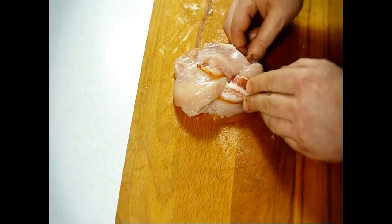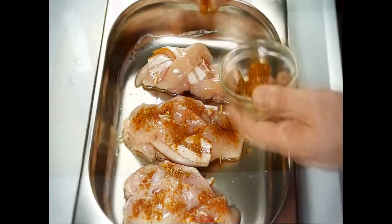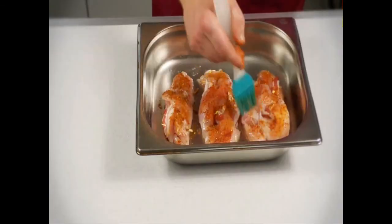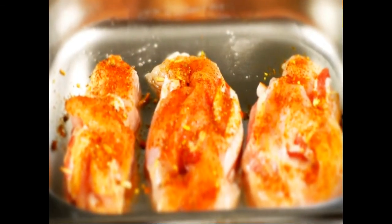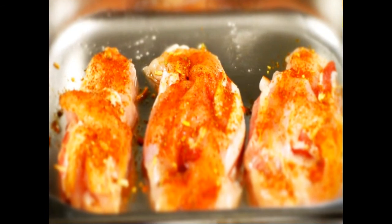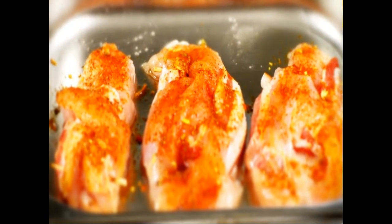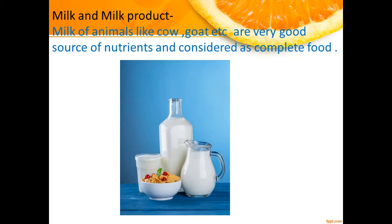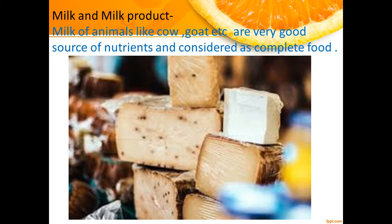These are great sources of protein for us. The next important food we get from cow, goat, buffalo, camel, etc., is milk. Milk and milk products are considered as complete food, as they contain all types of nutrients necessary for the body.